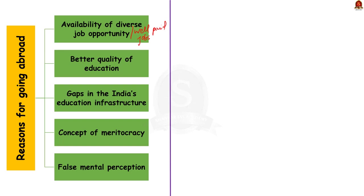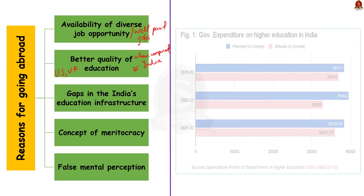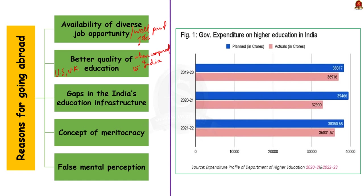Secondly, there is better quality of education in those countries. According to the World University Ranking 2022, the top ranks are held by universities from the US and UK, which is exactly where Indian students are going. Thirdly, there are gaps in India's education infrastructure because of insufficient grants for scholarships, faculty shortages, and low government expenditure on higher education.